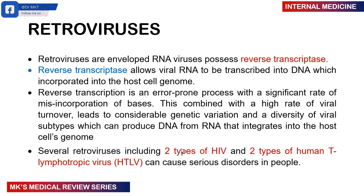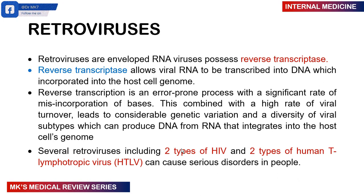There are several retroviruses. These include the two types of HIV: HIV type 1 and HIV type 2. I'm going to be focusing mostly on HIV type 1 because that is what is common in our setting here in Zambia. You also have the human T-lymphotropic virus types 1 and 2, which also fall under the retroviridae family and can cause serious disorders. Remember that HIV is a lentivirus, belonging to the genus lentivirus, which is part of the larger family retroviridae. The bulk majority of these viruses have the enzyme reverse transcriptase.